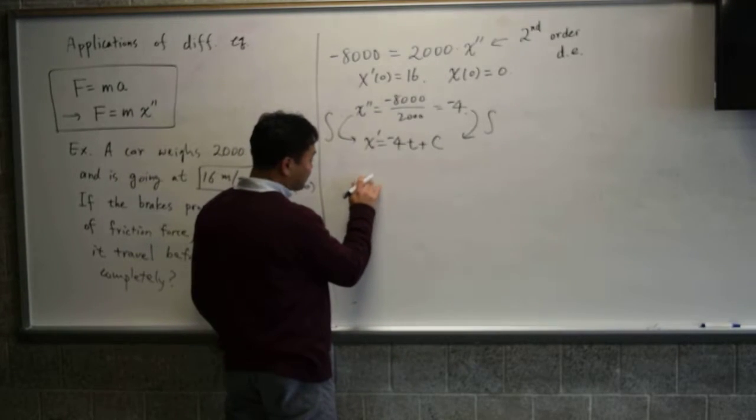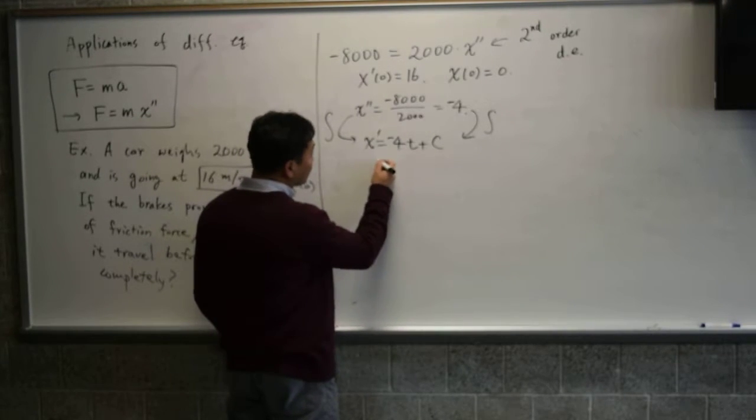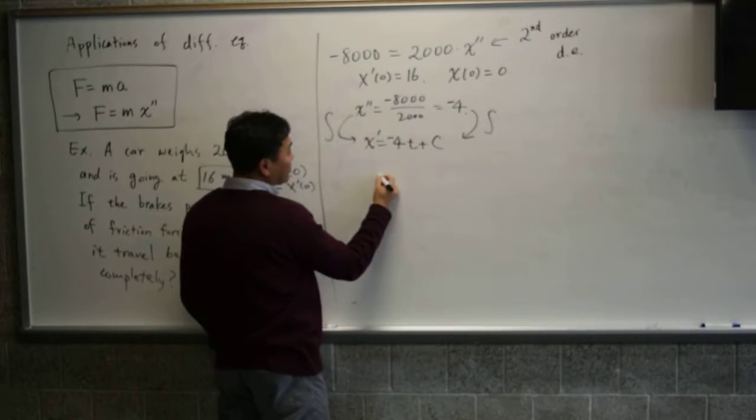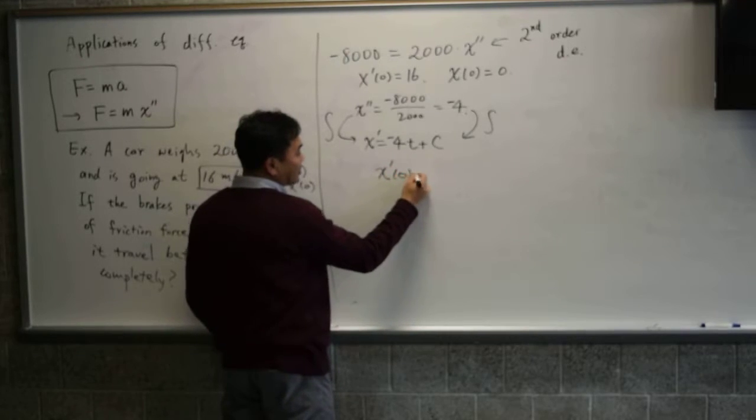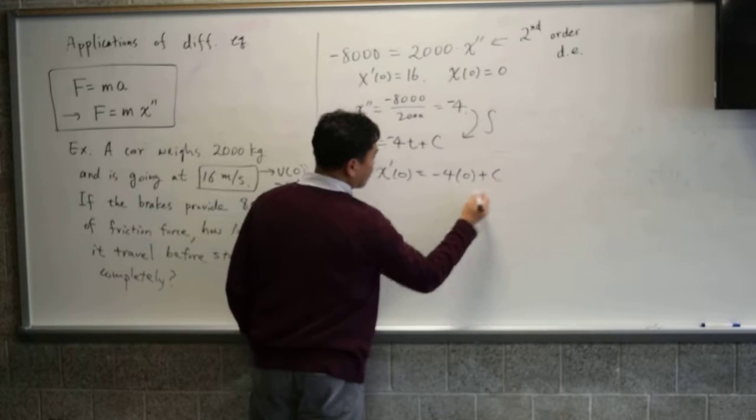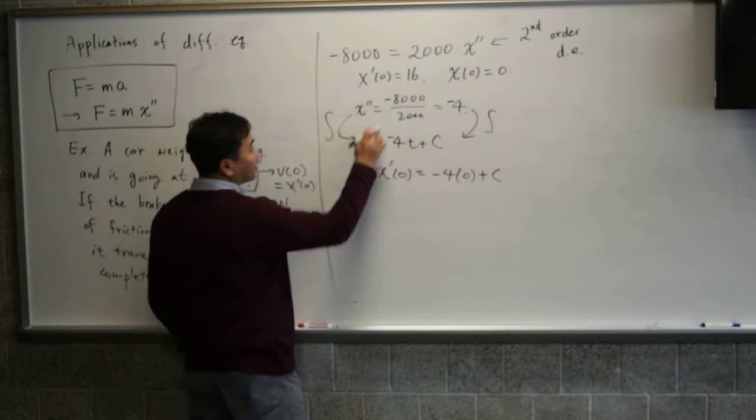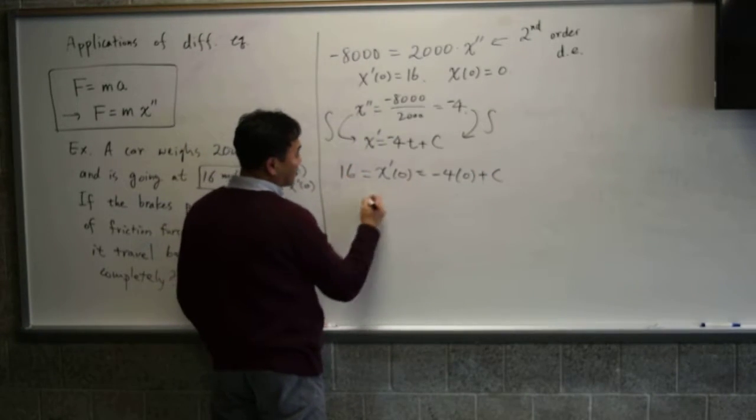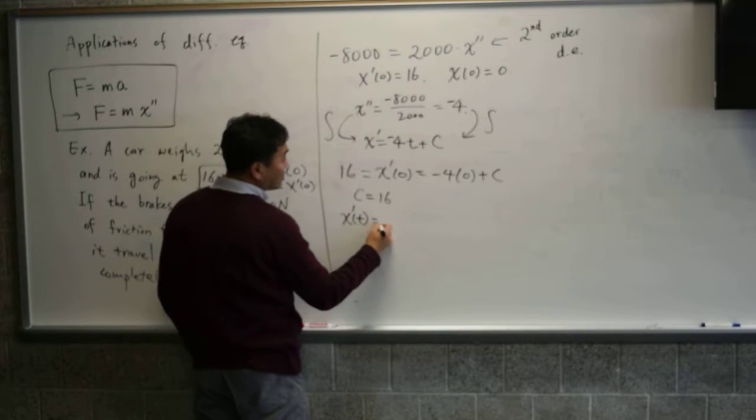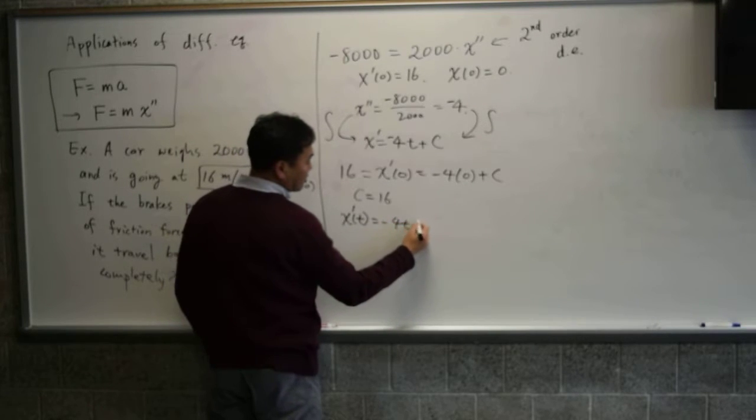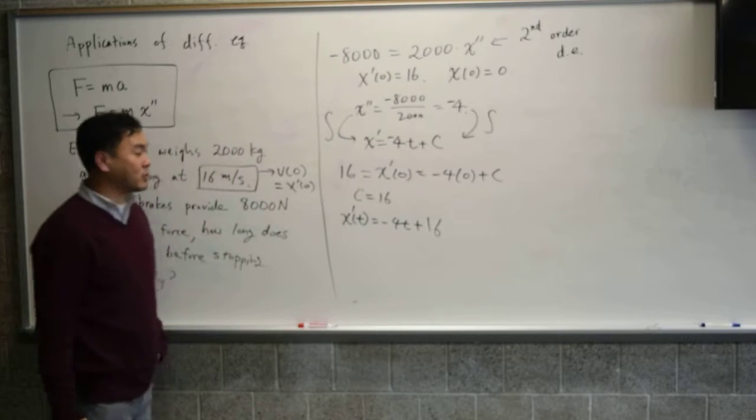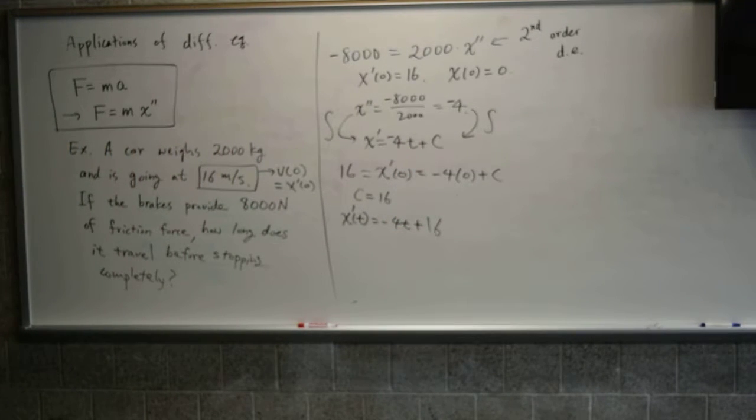And then to verify what c should be, we can use this. So if I evaluate x prime at zero, meaning that t value is set at zero, and that's equal to 16, we see that c has to be equal to 16. So we get x prime of t equals to negative 4t plus 16, after replacing this c equals to 16 here. So that's what we get. That's the speed at each moment.